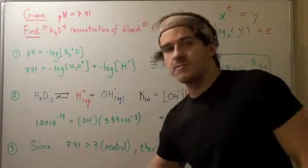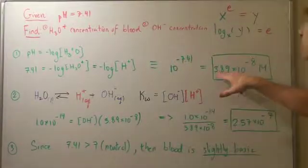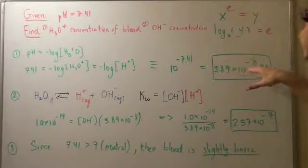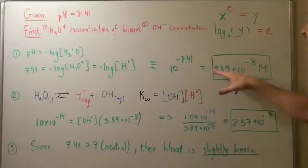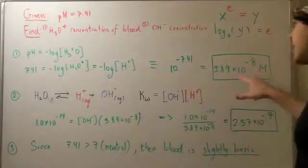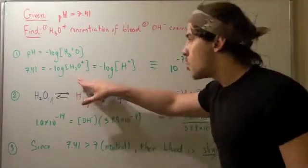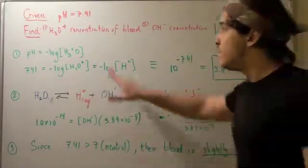We get 10 to the negative 7.41 is equal. Now, we take our calculator. We simply plug it into our calculator and we find our result. Namely, 3.89 times 10 to the negative 8 molar. And this is equivalent to this and this. This is our hydride ion concentration as well as our hydronium ion concentration. So, we found part 1.